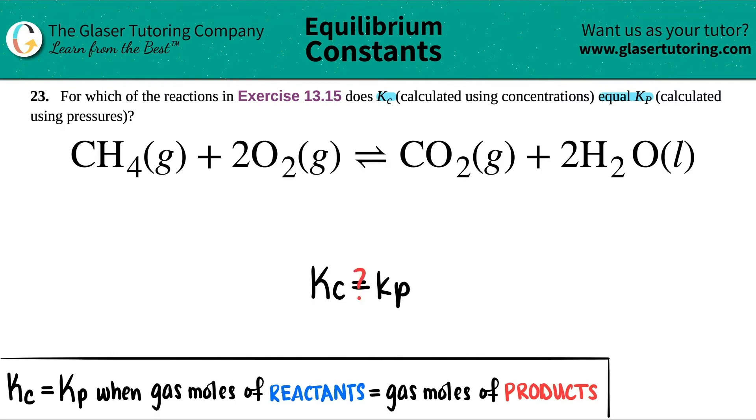Okay, so that's a big question mark here. Well, here's what we need to know. If the Kc equals Kp, that means the gas moles, the number of gases, the moles of gas on the reactant side has to equal the number of moles of the gases on the product side. But it's being very specific. We only care about the gases.